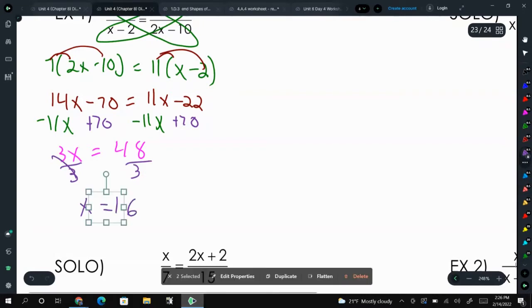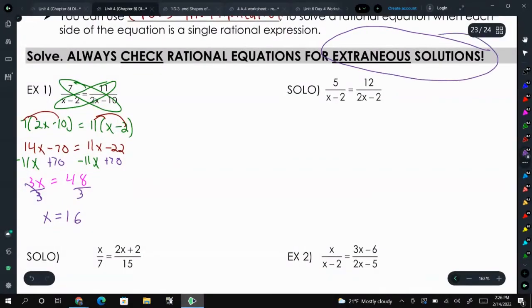Now, with rational equations, we talked about that you have to check your solutions, find any extraneous solutions. So we're going to double check. And as I said before, almost 100% of the time, the only answers that won't work are ones that will give you 0 in the denominator. But let's just make it a habit of always checking.